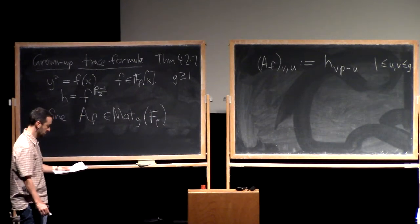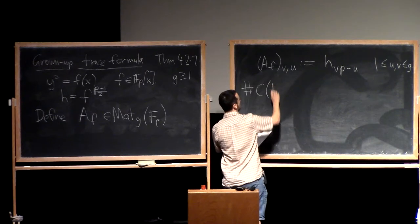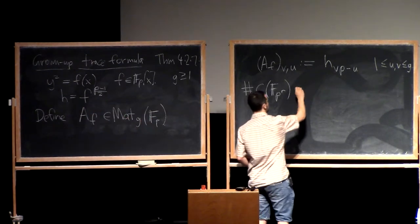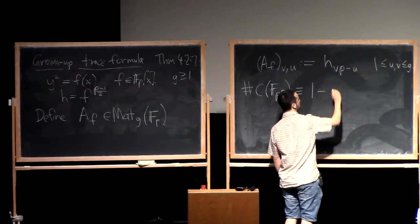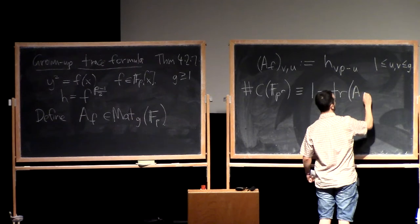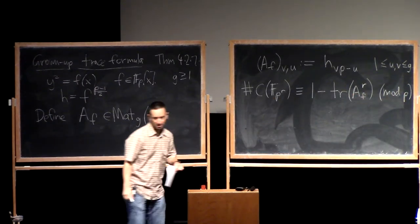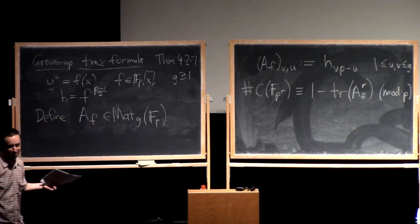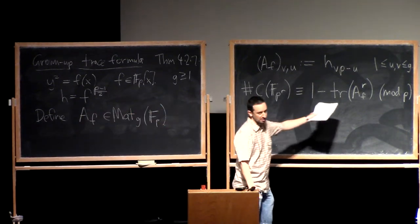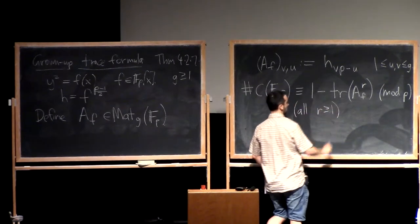Here is the theorem: if I look at the number of points on the curve over F_p^r — not just F_p but extensions — this is congruent to 1 minus the trace of the r-th power of this matrix, modulo p. We can only get it modulo p because we're only looking at h modulo p. Section 8 has a generalization for higher powers of p. This holds for all r greater than or equal to 1.